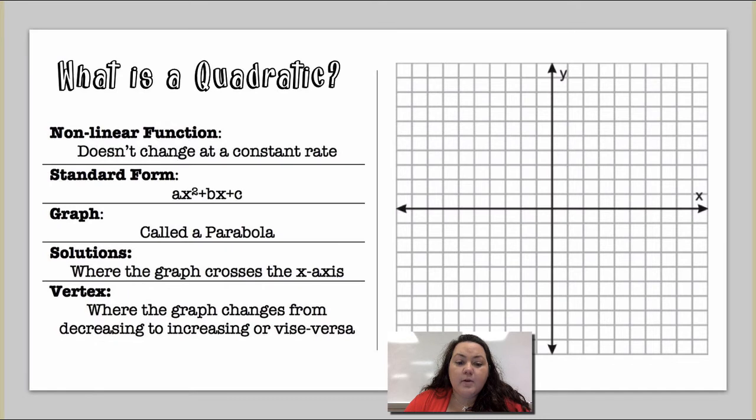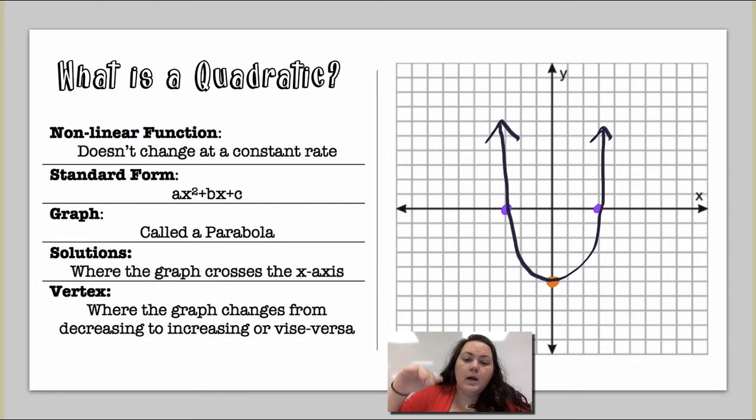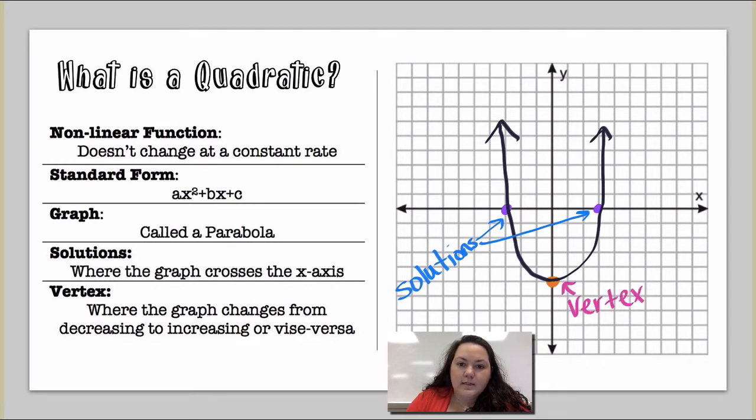The graph, the shape of the graph is called a parabola. It looks kind of like this. And then the solutions are where the graph crosses the x-axis. And the vertex is where the graph changes from decreasing to increasing or increasing to decreasing depending on if it's going up or going down. Alright, so there are your solutions where it crosses the x-axis. There's my vertex, that changing point where it was decreasing and now it's increasing.